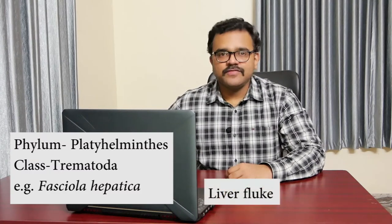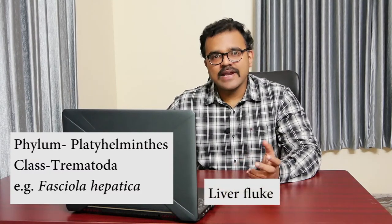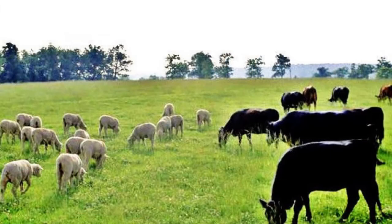Hi, this is Ajith. In this video we are going to discuss phylum Platyhelminthes, class Trematoda. The example we are going to deal with is Fasciola Hepatica, commonly known as liver fluke. It is an important trematode parasite of sheep, cattle and other domesticated mammals, inflicting severe and often fatal damage, resulting in large economic losses.